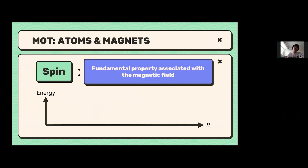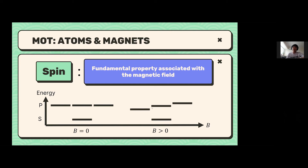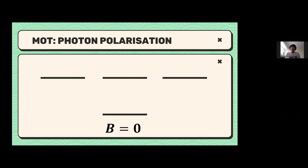If you plot energy versus magnetic field, when the magnetic field is at zero, you have the S and P shells — S is the circular shell, P is the dumbbell shell along x, y, and z. When the magnetic field is zero, the energy levels of the P shell subshells — Px, Py, and Pz — are degenerate, having the same energy. But if the magnetic field is nonzero, these subshells split apart and have different energies.